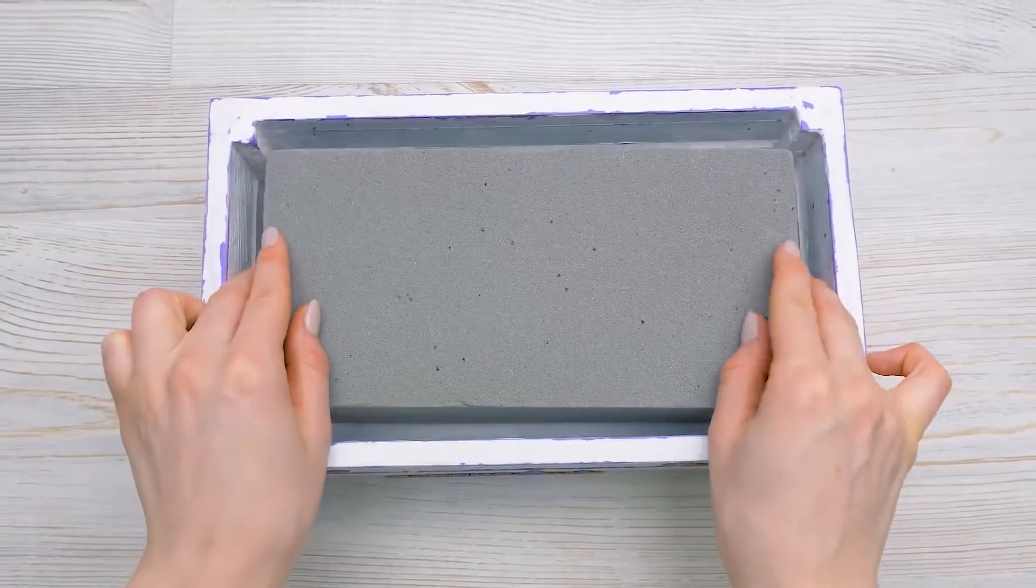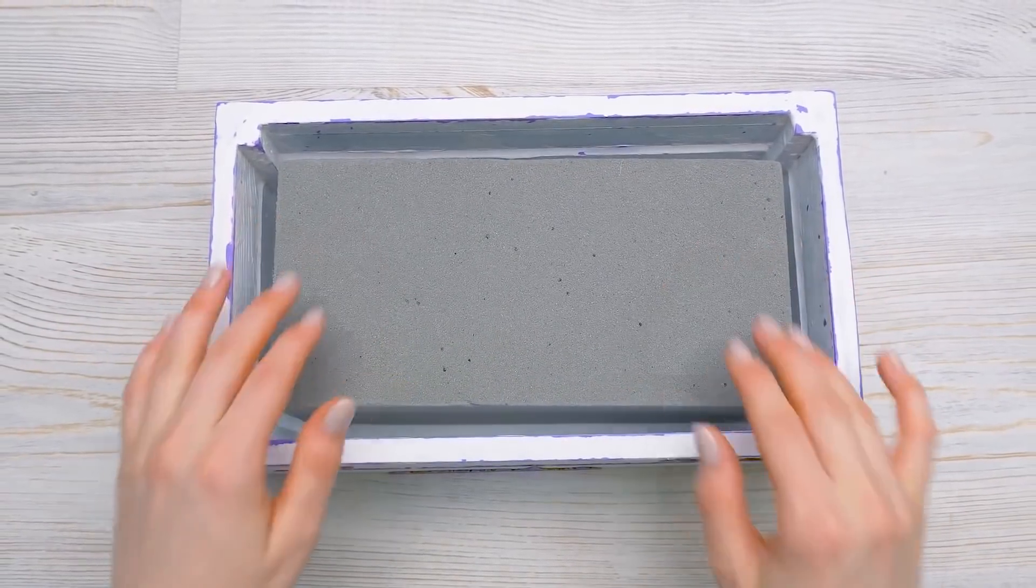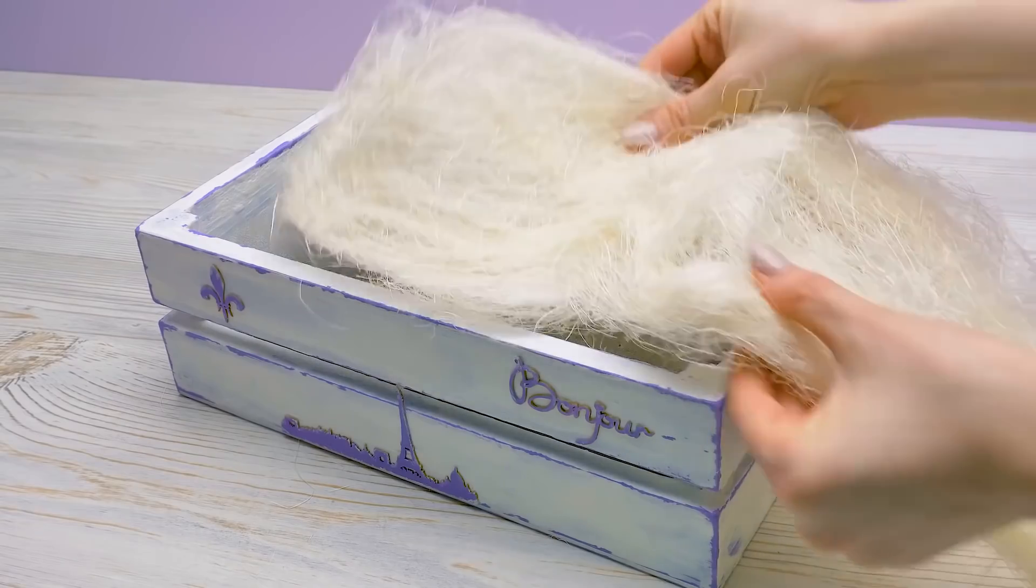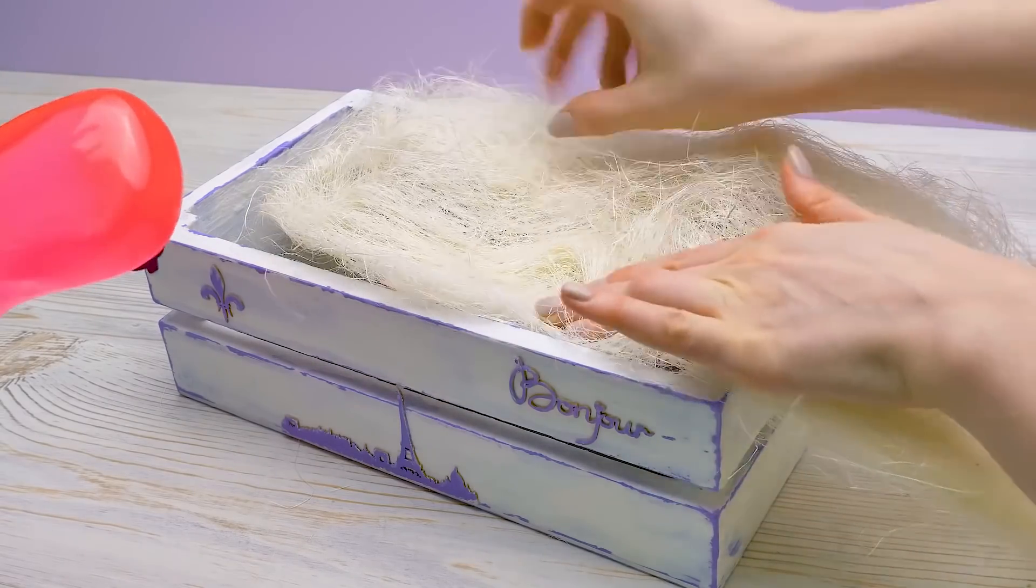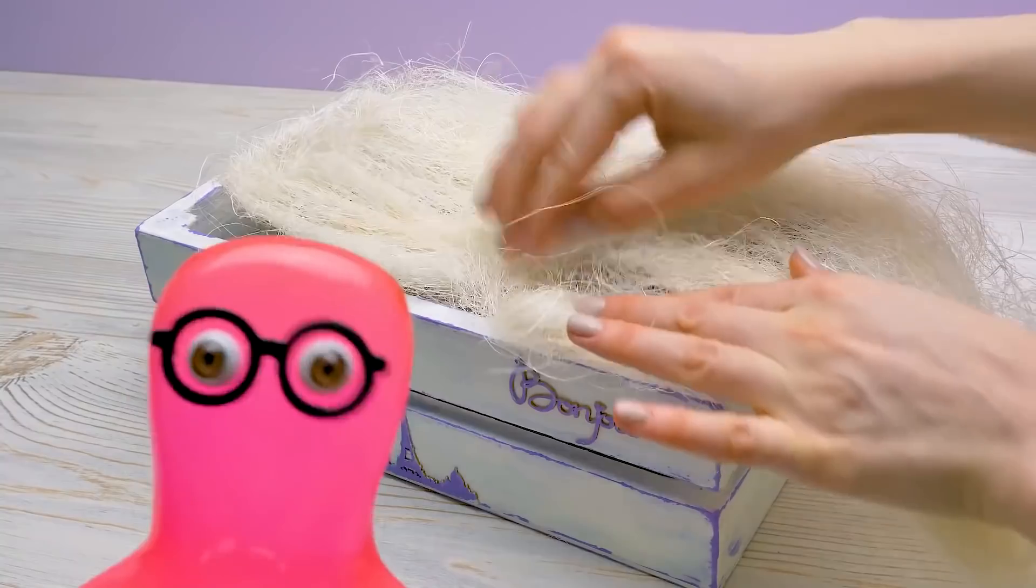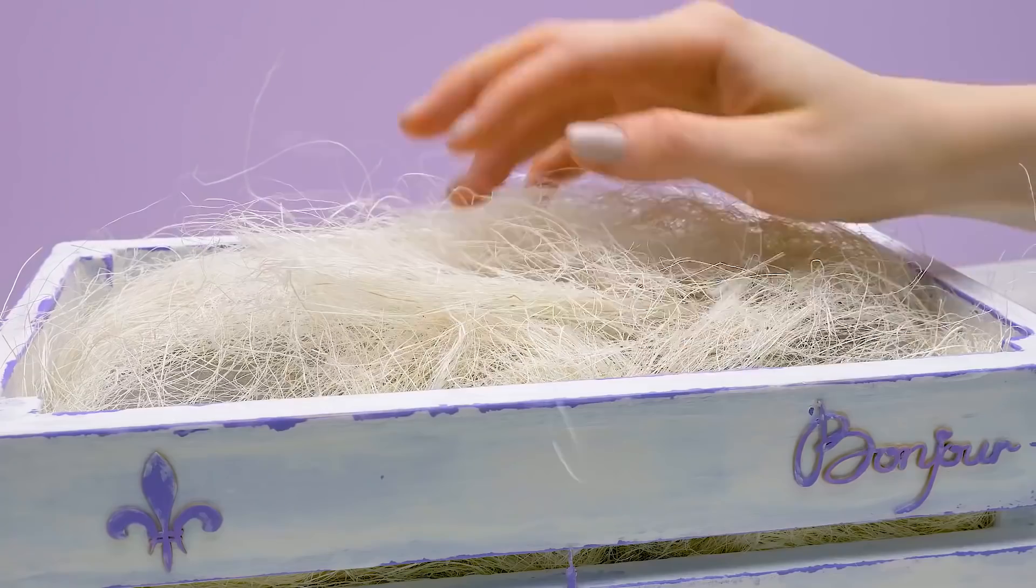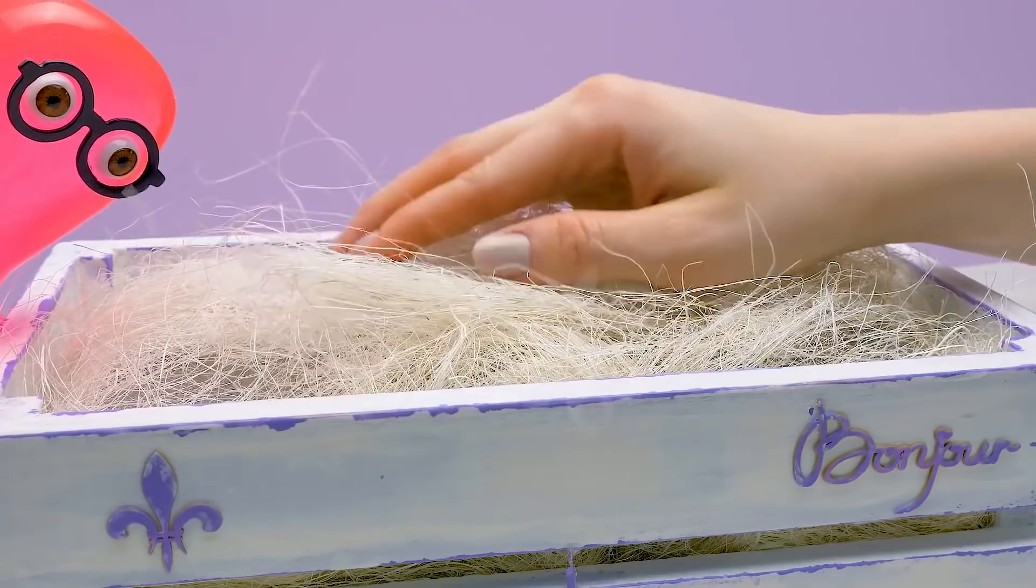Let's glue our gray SpongeBob to the crate. Like this. And decorate it with white sisal. Interesting! An eternal bouquet indeed! Just you wait! That's not all!